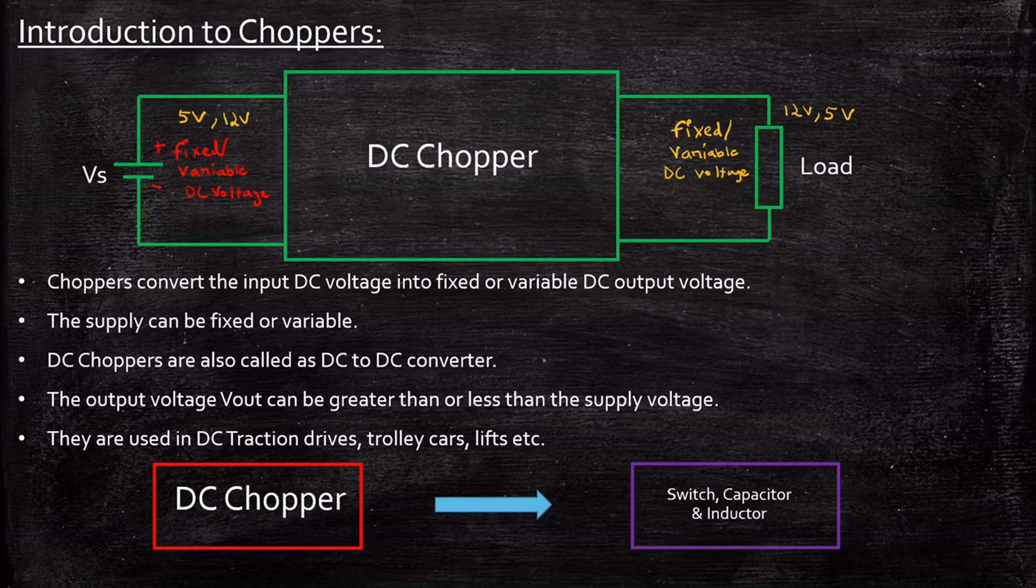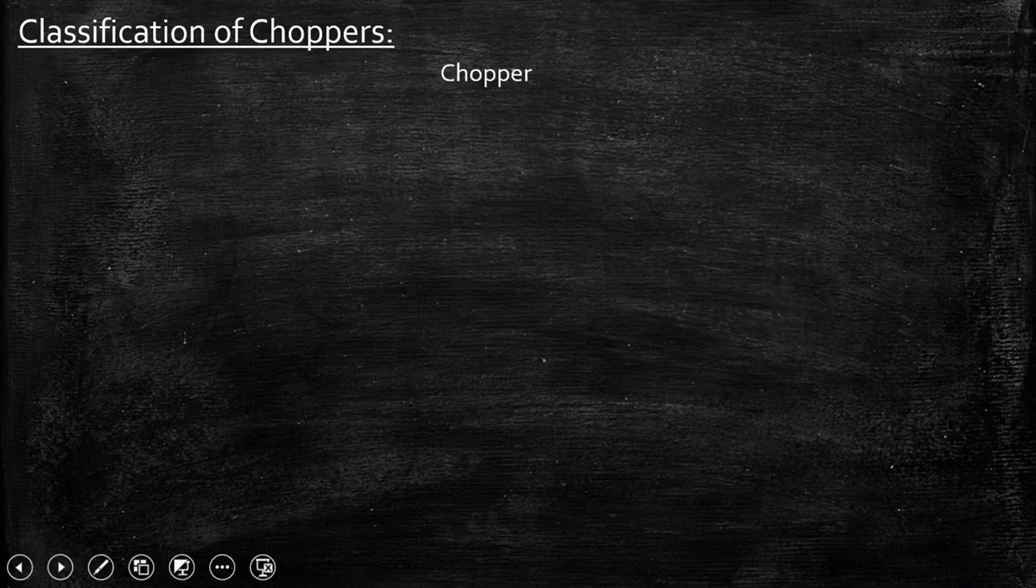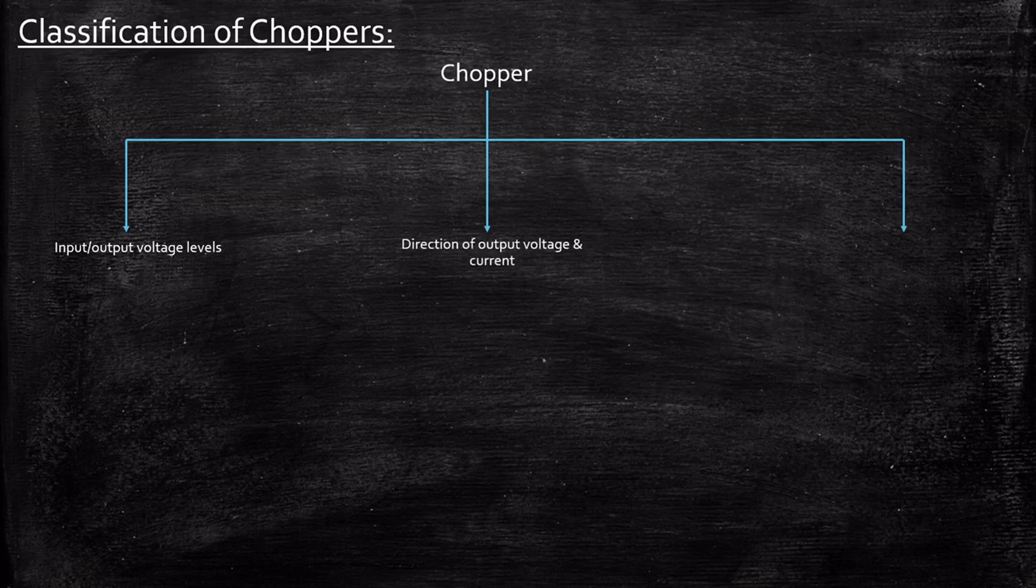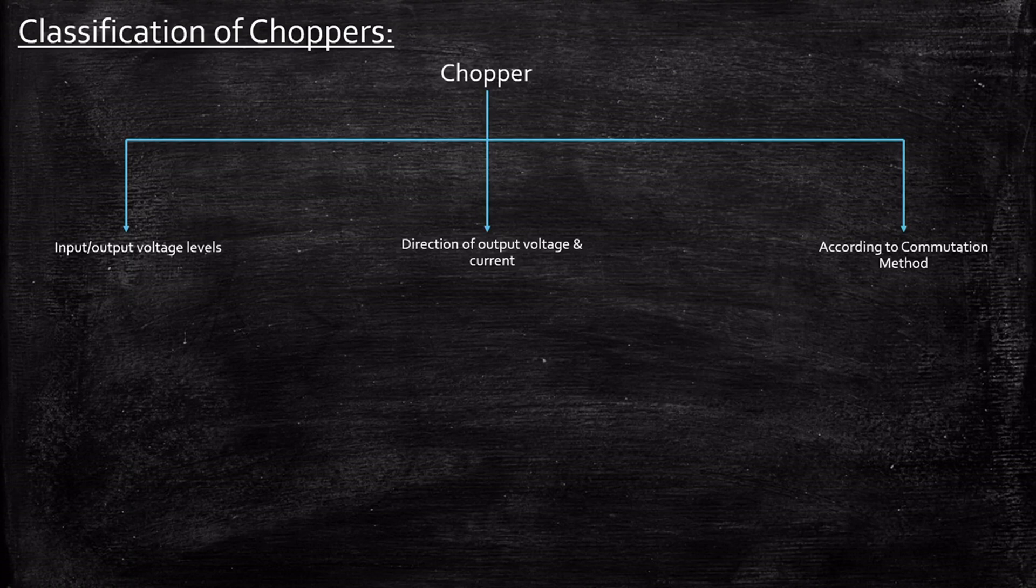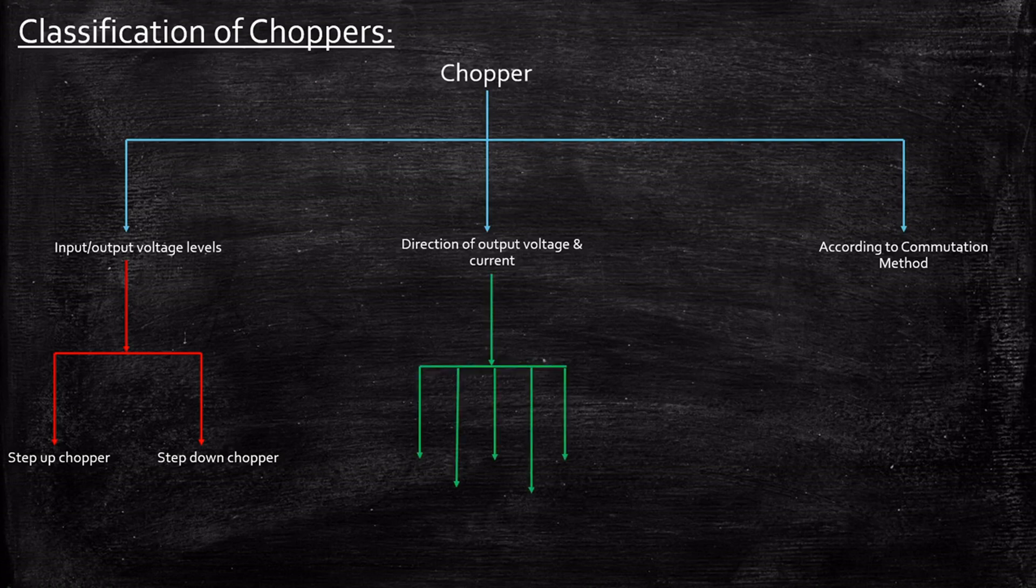So now we have seen the basics of what chopper is about. Now what are the classification around it? The classification is that they're mainly classified into three different categories: based on input or output voltage levels, direction of output voltage and current, and according to the commutation method. Based on input or output voltage levels, it can either be step up or step down. Based on direction of output voltage or current, the output voltage and current can be positive, meaning it can operate in the first quadrant and that is called as class A chopper.